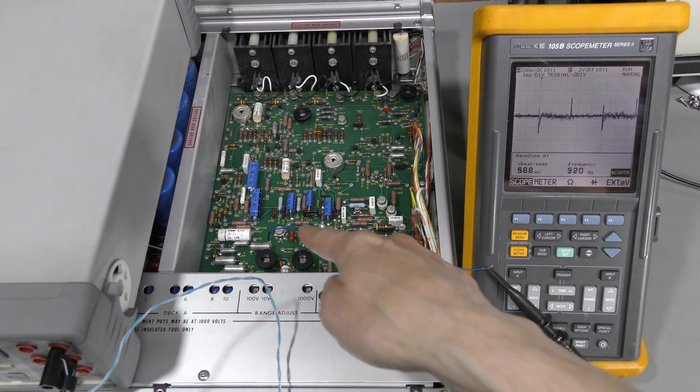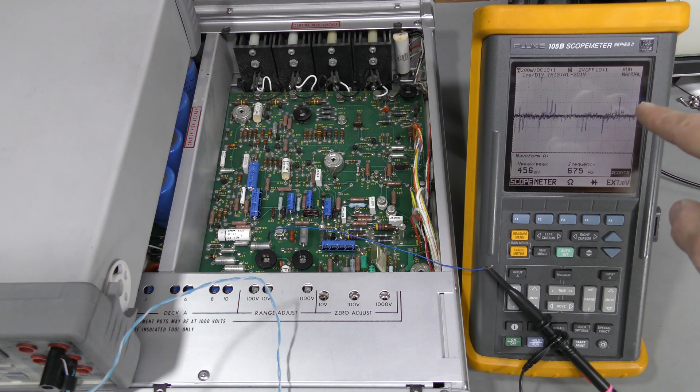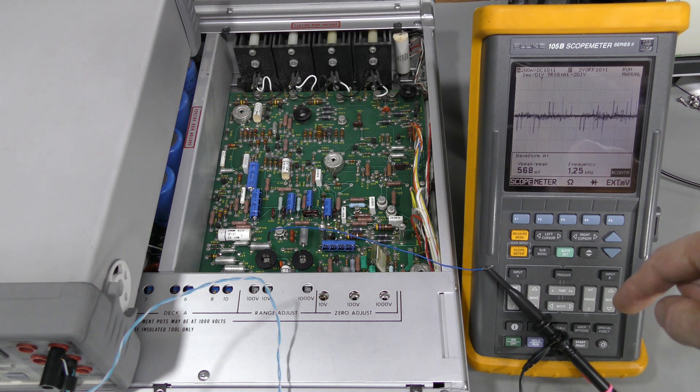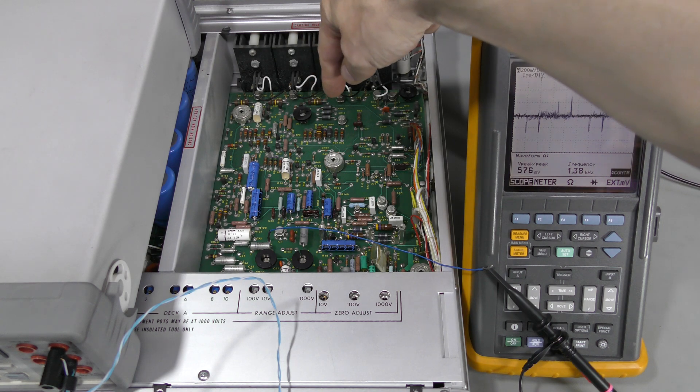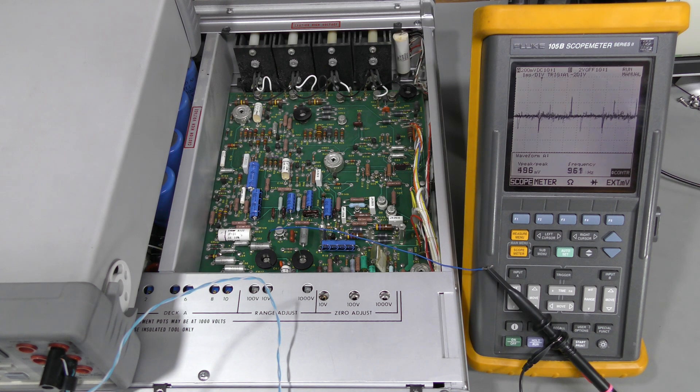There is a test point here, TP10. And we are supposed to see something like this. This is after adjustment. Spikes up and down, approximately the same amplitude and not more than 300mV or about 600mV peak-to-peak. But they were gigantic and to the negative side only. So I adjusted this pot for balance and that one for lowest amplitude. And now it looks as described in the service manual.